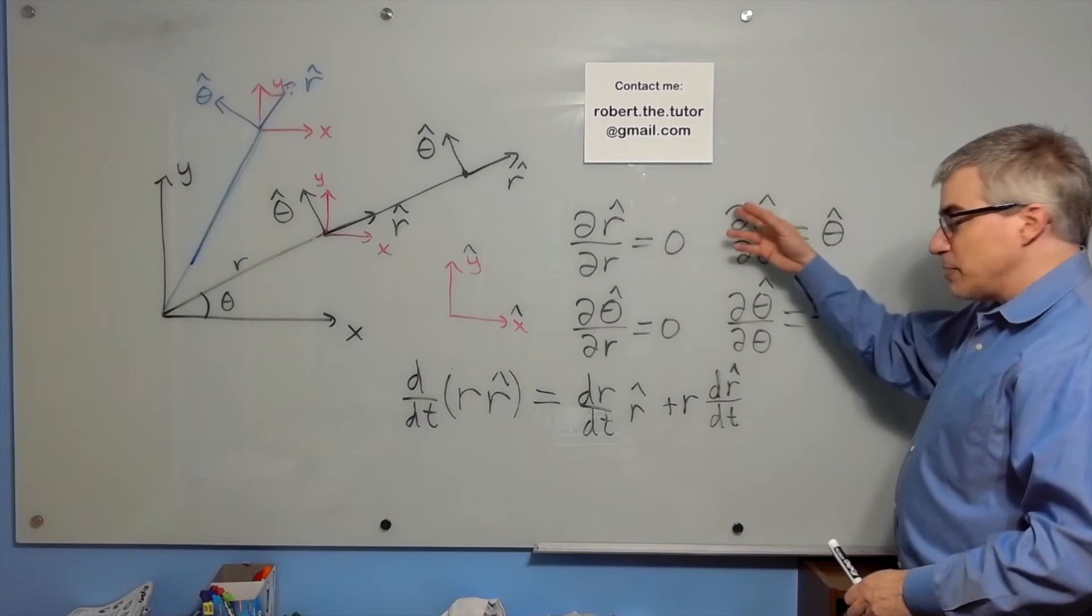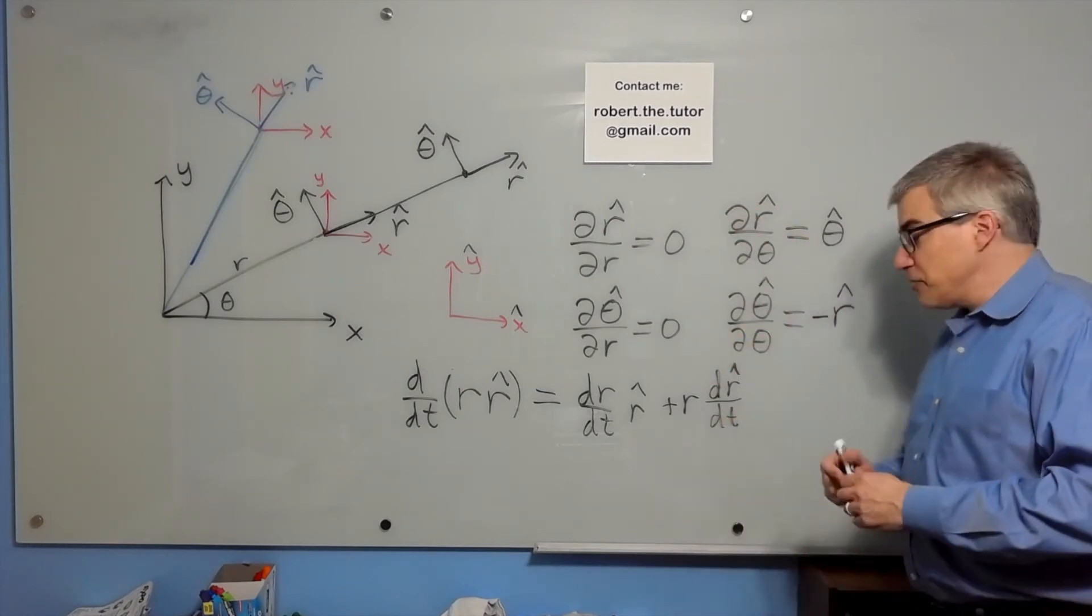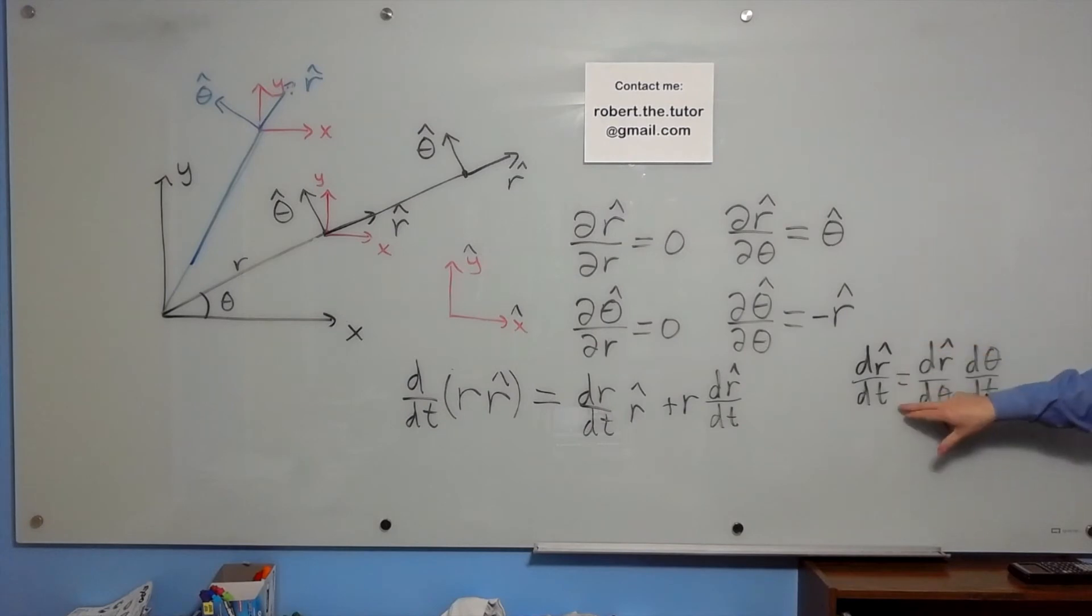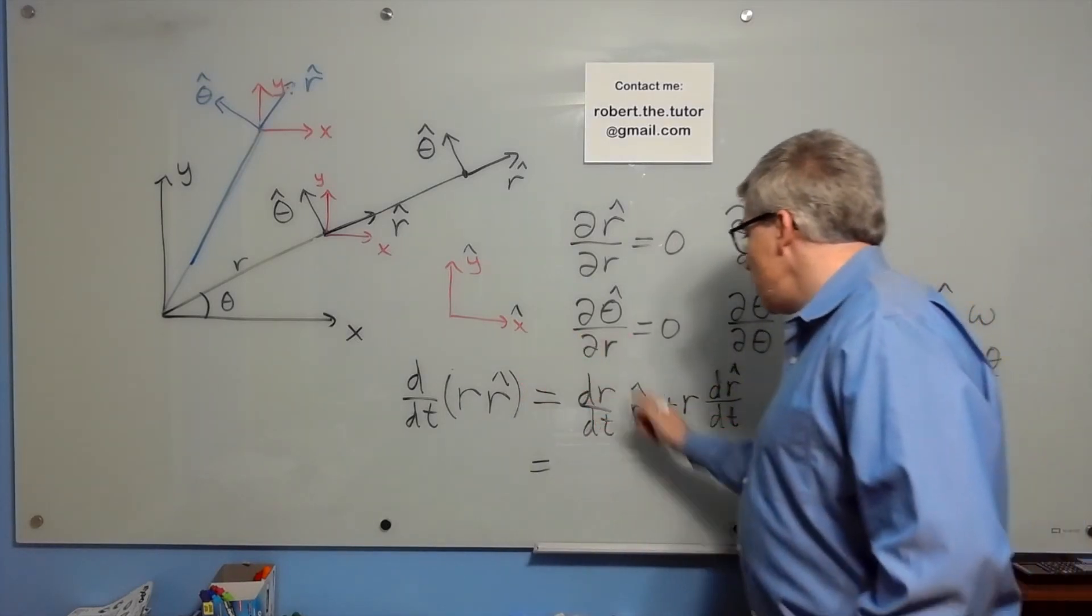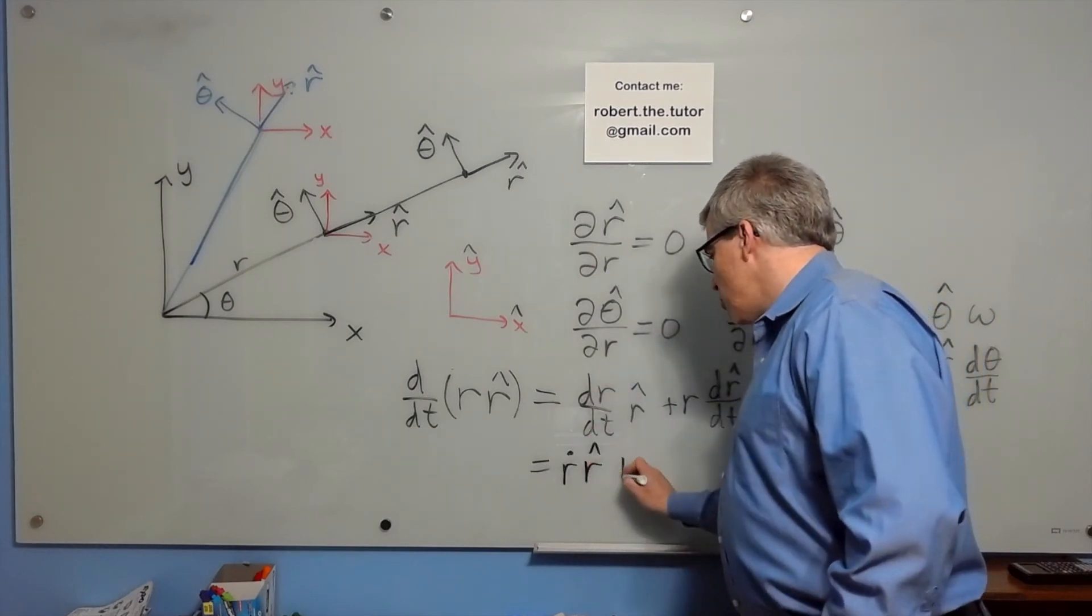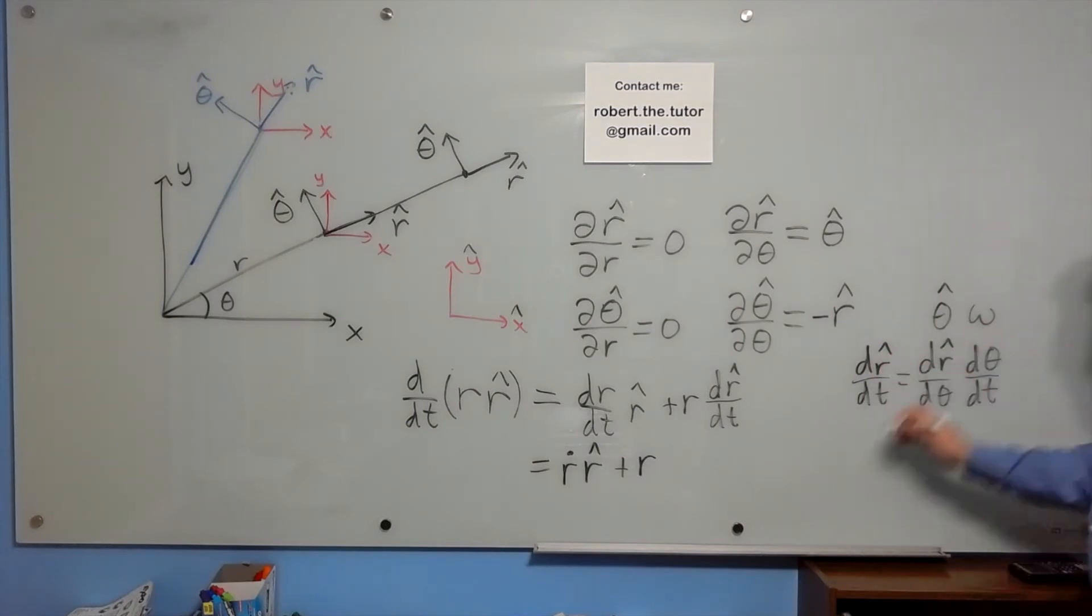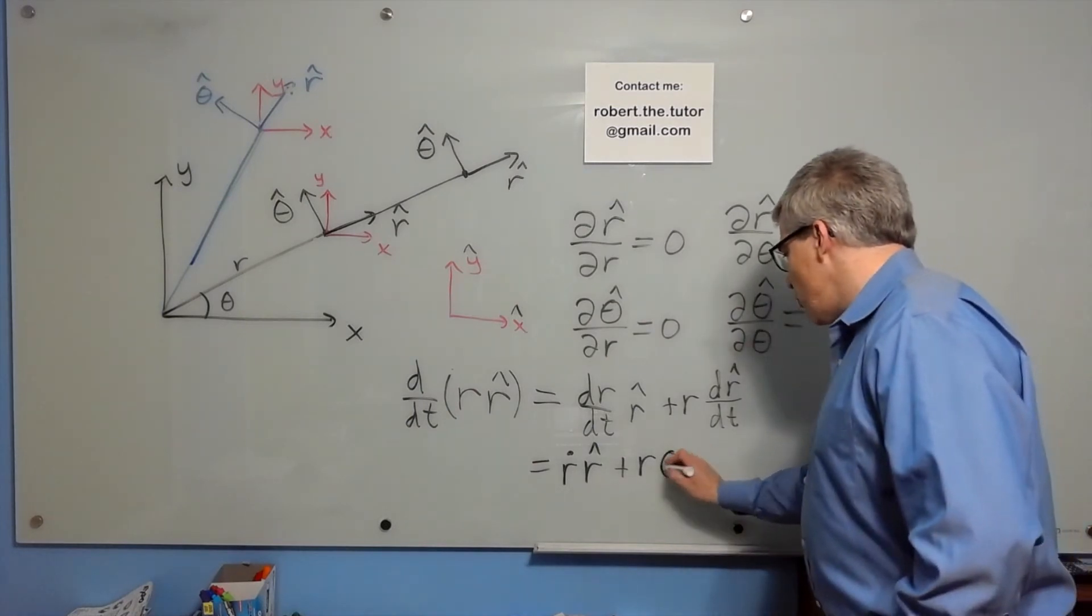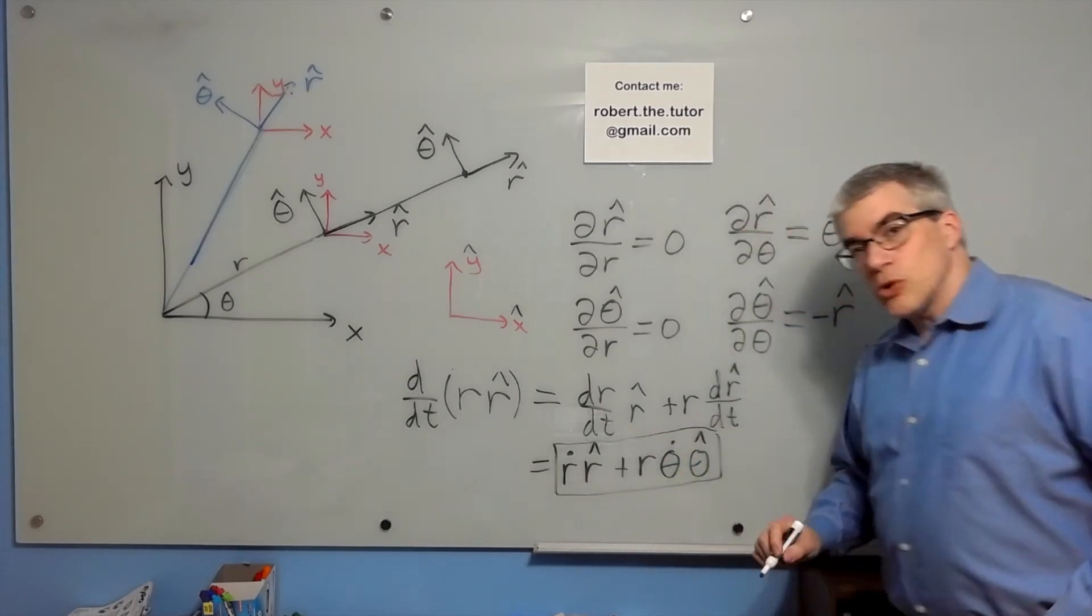The derivative of that would be dr/dt times r-hat plus r dr-hat/dt. This itself, we were talking about changes with respect to theta. If we're talking about changes with respect to time, we need another chain rule. So dr-hat/dt is really dr-hat/d-theta d-theta/dt. dr-hat/d-theta can be theta-hat, which means if we use dot for time derivative, dr/dt would be r-dot r-hat plus r, and then dr-hat/dt would actually be theta-dot or omega theta-hat.